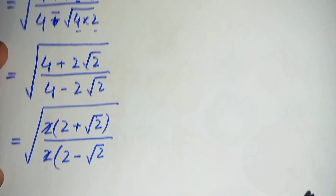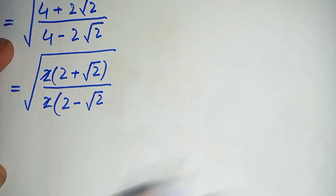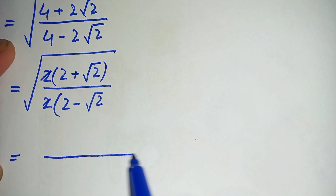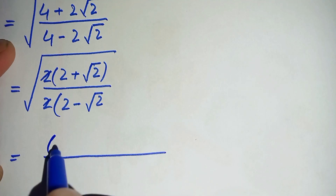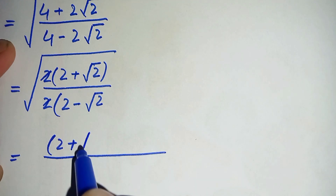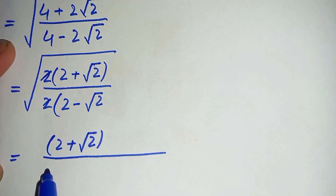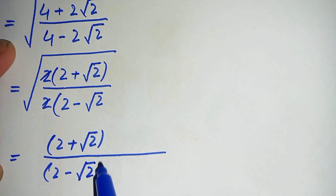We cancel the 2 in the numerator with the 2 in the denominator. This gives us the square root of (2 plus square root of 2) divided by (2 minus square root of 2).